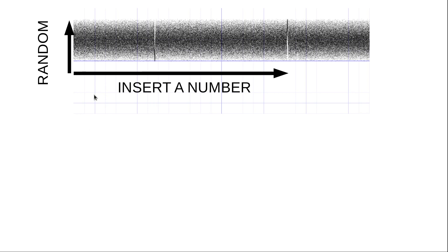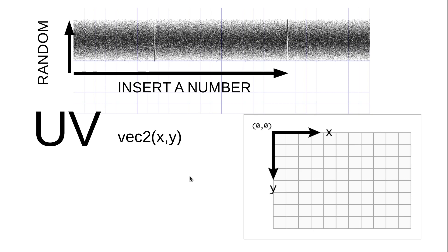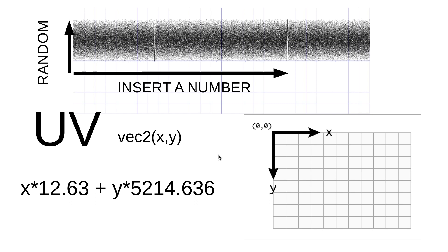So up to now, we insert one number into the function and it gives us a random number. But what if we want to create a random number for each point on our screen? Each point on our screen has two values. What we are going to do is multiply each component of our vector — the UV x and y positions — by a random number, and then add them together using a dot product.